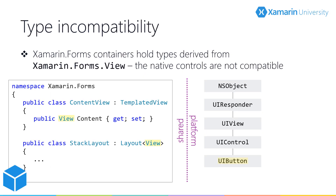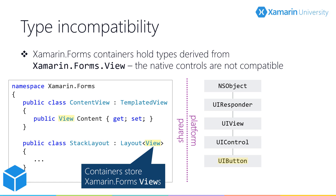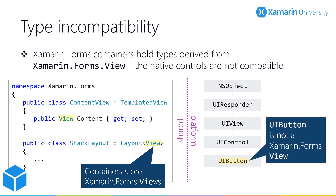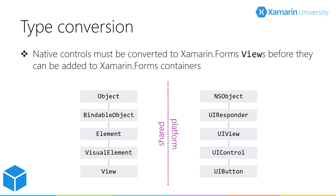So why is this a big deal? On the Xamarin Forms side, we define our UI in a common abstract way using objects derived from the Xamarin Forms elements, or often the higher-level Xamarin Forms view type. The Xamarin Forms layouts are designed to hold objects of these types. On the native side, we're using native types, and the native views do not derive from Xamarin Forms. The shared layout elements and native controls are not type compatible. In order to add native controls into our Xamarin Forms UI, we need to somehow convert our native UI views to a compatible type.